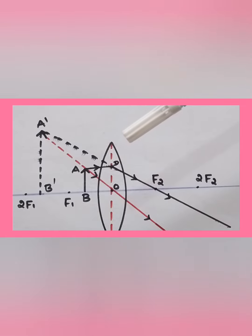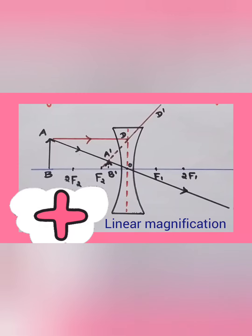What we can conclude: in case of a convex lens, linear magnification can be positive or negative, both positive and negative. In case of a concave lens...